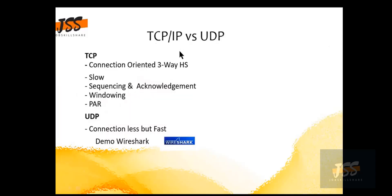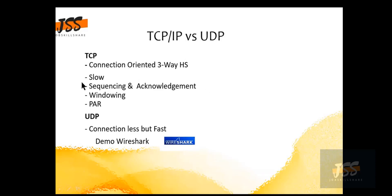Here we come to the slide talking about TCP/IP versus UDP. The difference between TCP and UDP — let's go over this one by one. TCP is connection-oriented and uses the three-way handshake process. This is reliable, but the drawback is it is slow. It uses sequencing and acknowledgement, so before they send information, they confirm whether the other party is there or alive.